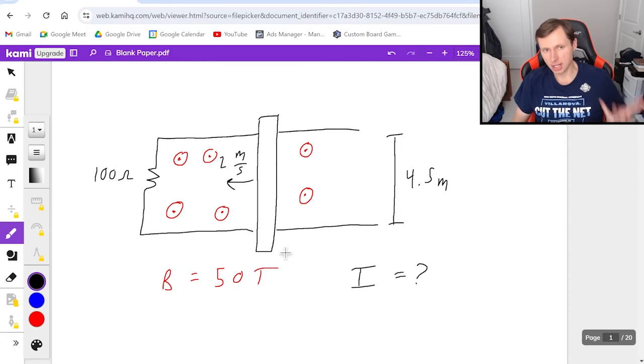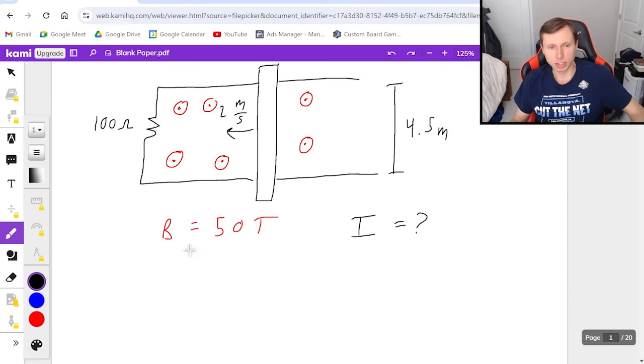So because we have a changing flux, the flux is decreasing because if you want to think of it as this rectangle is getting smaller, the flux is going to be decreasing. Because we have a changing flux, it means we're going to use Faraday's Law, which is this equation.